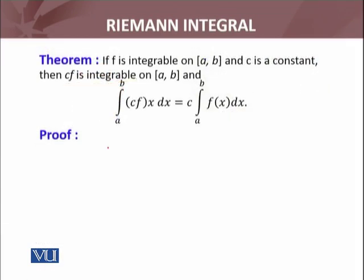I have to prove two things: first, that cf is integrable, and second, that its integral equals c times the integral of f. So if I have to prove that cf is integrable, I will consider the Riemann sum of cf.